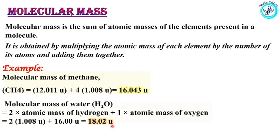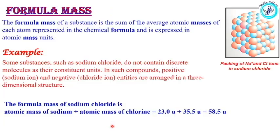This is formula mass. The formula mass of a substance is the sum of the average atomic masses of each atom present in the chemical formula, expressed in atomic mass units. For ionic compounds like sodium chloride (Na⁺Cl⁻), we add the masses: atomic mass of sodium plus atomic mass of chlorine, that is 23u plus 35.5u, which equals 58.5u.